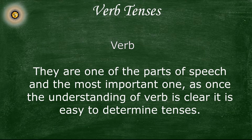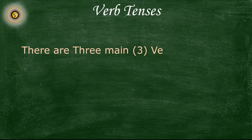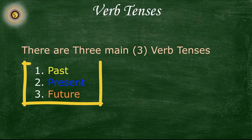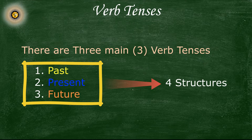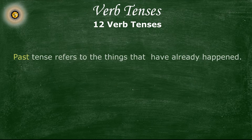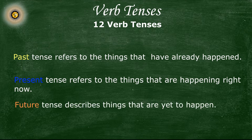There are three verb tenses: the past, the present, and the future, and all of these three tenses have further four structures, so in total there are 12 verb tenses. The past tense refers to things that have already happened. The present tense is used to describe things that are happening right now, and the future tense describes things that have yet to happen.